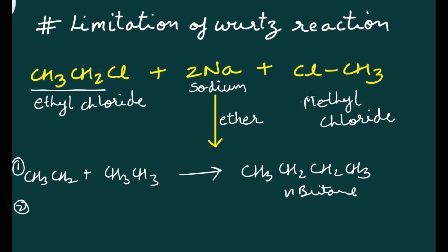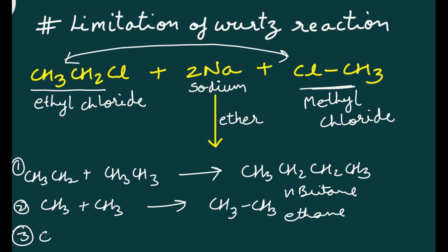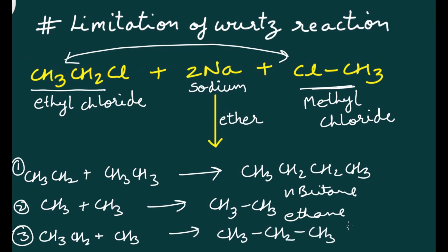Second, methyl chloride can react with itself to give CH3-CH3, which is ethane. Third, ethyl chloride can react with methyl chloride to give CH3CH2-CH3, which is propane. So in this particular case, instead of getting a single product, you receive three different products.